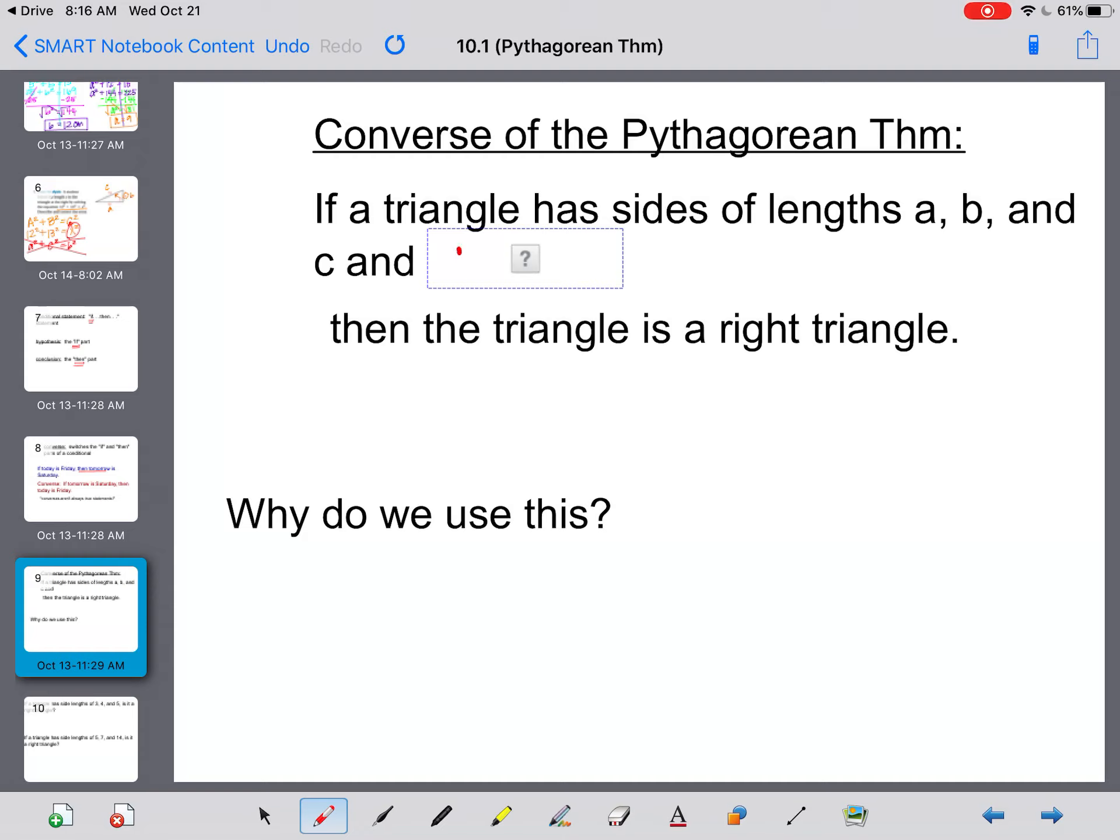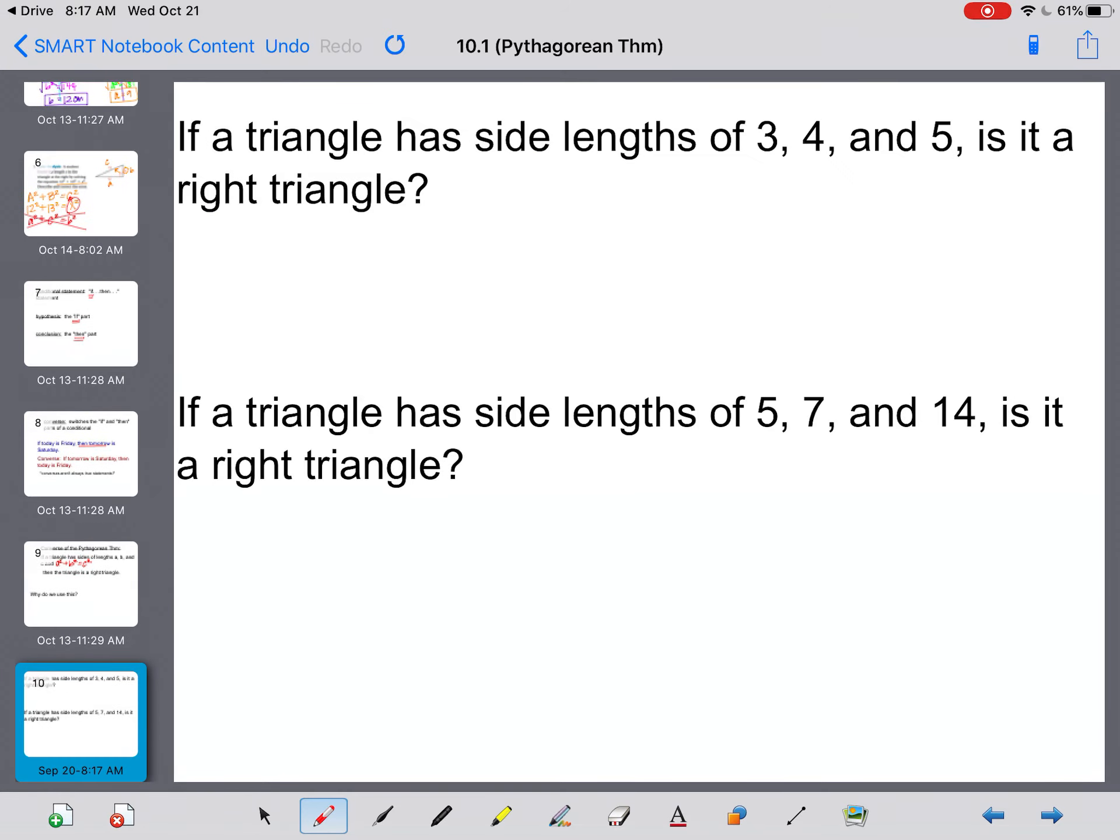The converse of the Pythagorean theorem says if a triangle has side lengths ABC and A squared plus B squared equals C squared, then the triangle is a right triangle. Is this true? Yes, this is true. So we're going to use this here. This is an example to show you when we'll use this.